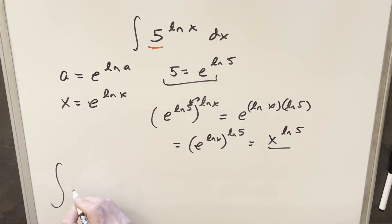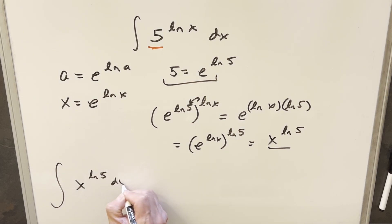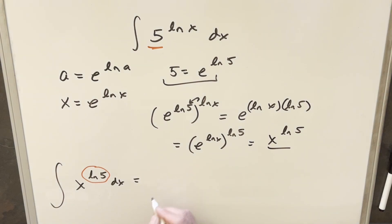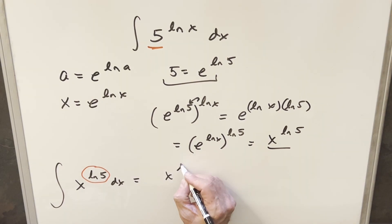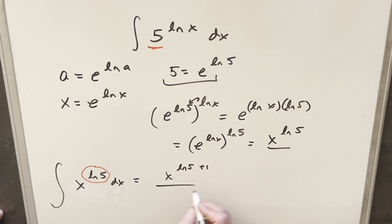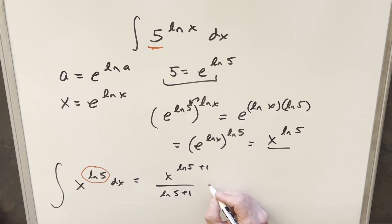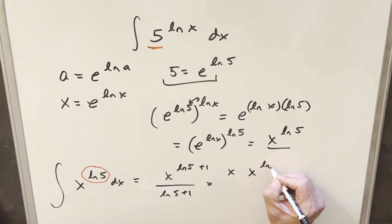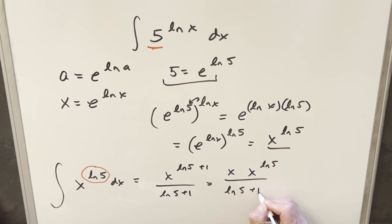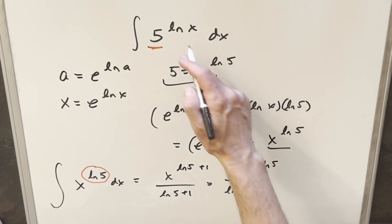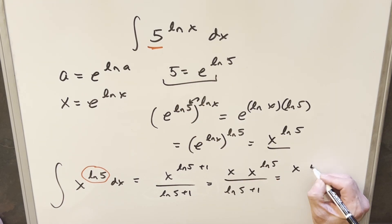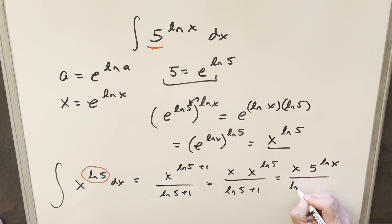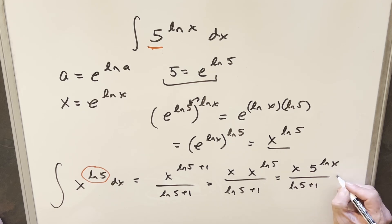So now we put this back into our integral — we're actually integrating x to the ln 5 dx. Now we have our base x, and ln 5 is just a constant number, so we can use the power rule here. Integrating this, we get x to the ln 5 plus 1 over ln 5 plus 1. We can pull an x out from the exponent and write this as x times x to the ln 5 over ln 5 plus 1. Since x to the ln 5 equals 5 to the ln x, we can write this as x times 5 to the ln x over ln 5 plus 1, plus C.